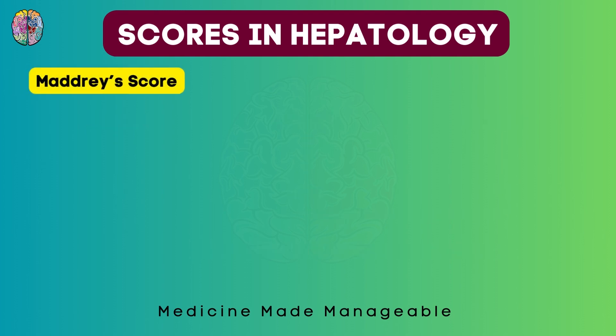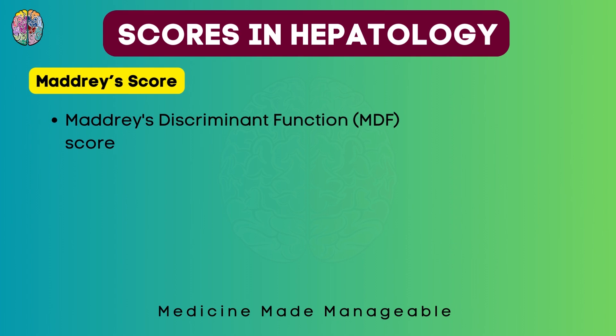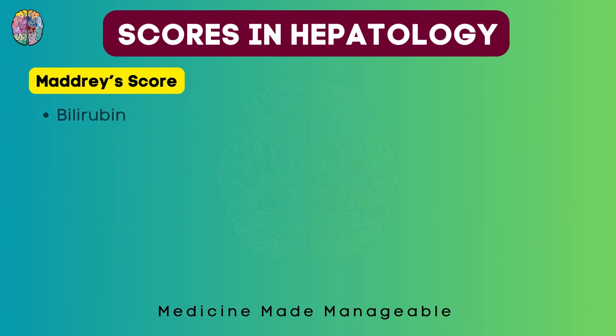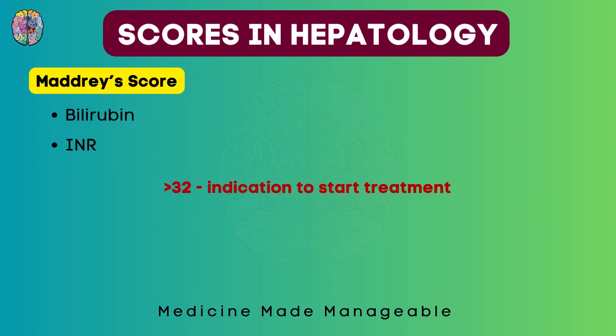The next score is the Maddrey score, also known as Maddrey's Discriminant Function Score. It is used to assess the severity of alcoholic hepatitis. This one is the easiest to remember because only bilirubin and INR are measured. If the score is more than 32, it is an indication to start treatment.